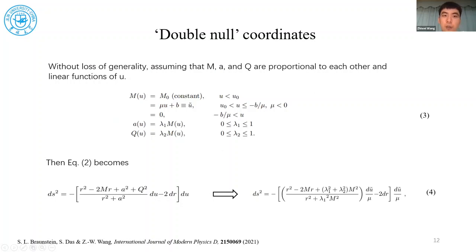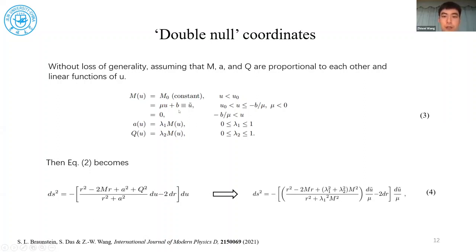We assume M, Q, and the angular momentum A are proportional to each other and are linear functions of the time coordinate mu. So the mass will change with time by this function. The parameter mu describes the decreasing rate of the black hole — when mu is big, the mass is decreasing very quickly. All other parameters are proportional to the mass of the black hole. From equation two, we pull d-mu out and rewrite the metric into this form — we just insert this relation into the equation.